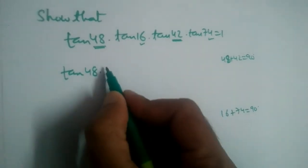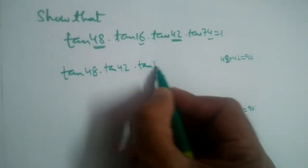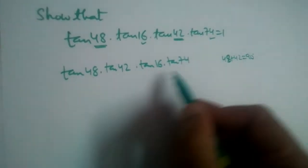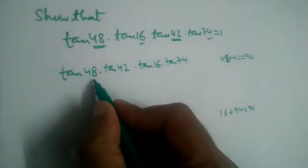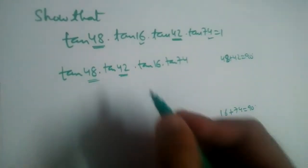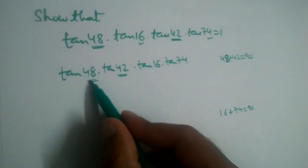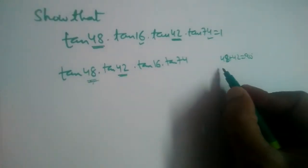tan 48° times tan 42° multiplied by tan 16° multiplied by tan 74°. We should prove that this value is equal to 1. Now see, we have 48 and 42, so these two are complementary angles. We should either change 48 or 42, so let us change 48.